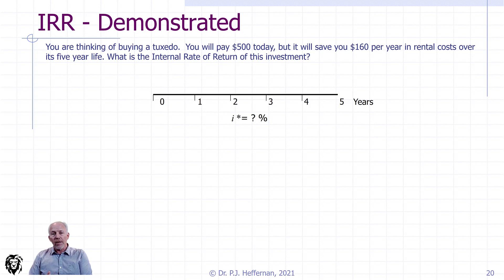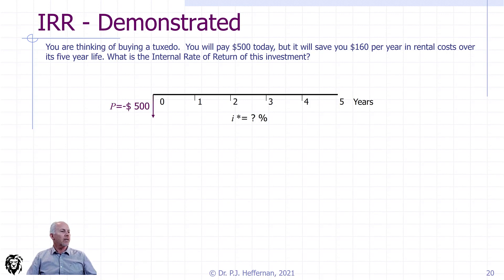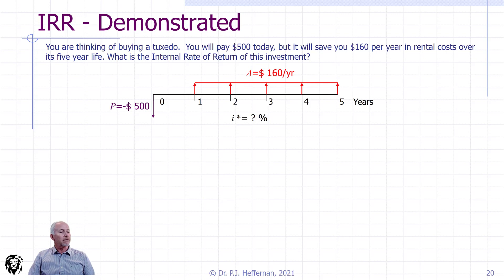Let's lay out our cash flow over time. In this case, we don't know what the discount rate is, so I-star, because we're looking at internal rate of return, equals some unknown value. Here's our cash flow: we have five hundred dollars now to buy our new tux — a fairly cheap tux, which is why it only lasts five years. Then we have our savings, or annuity, of one hundred and sixty dollars per year for the next five years, as shown here.